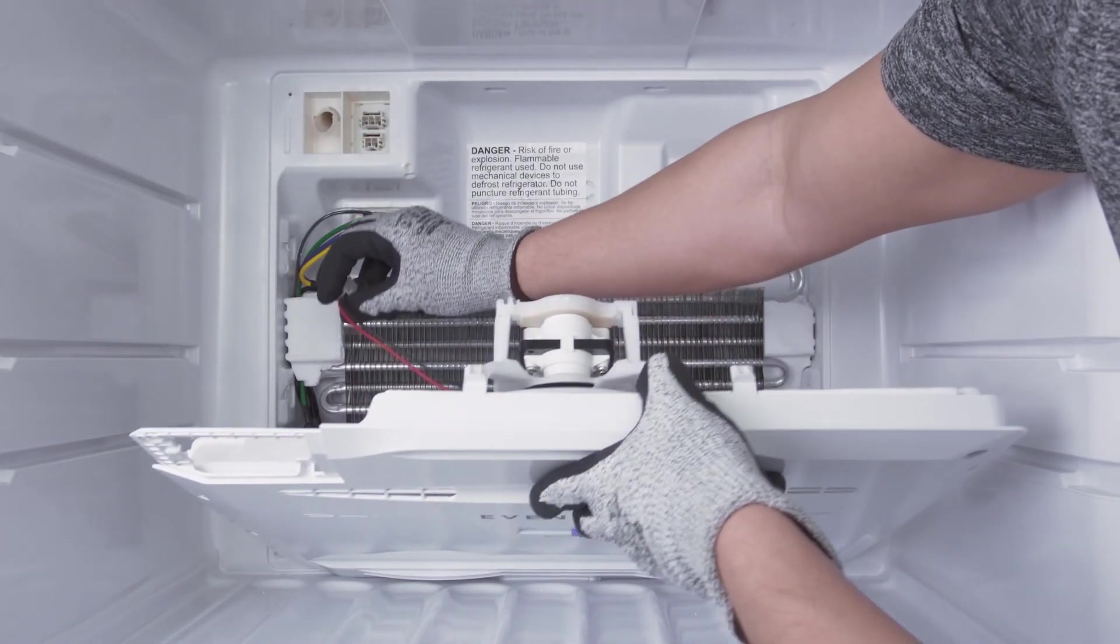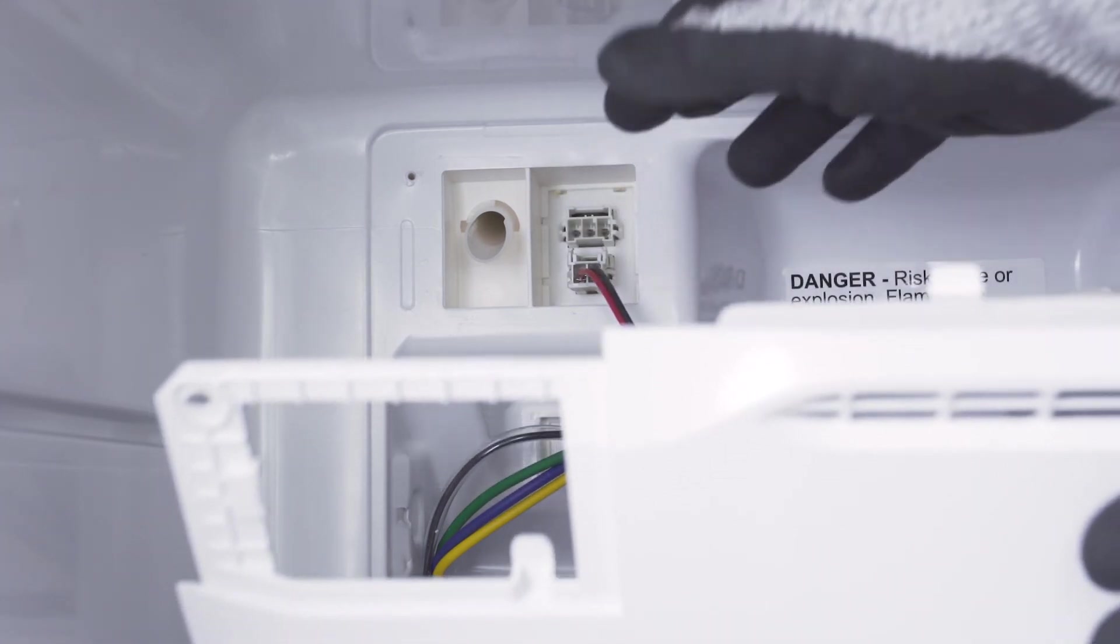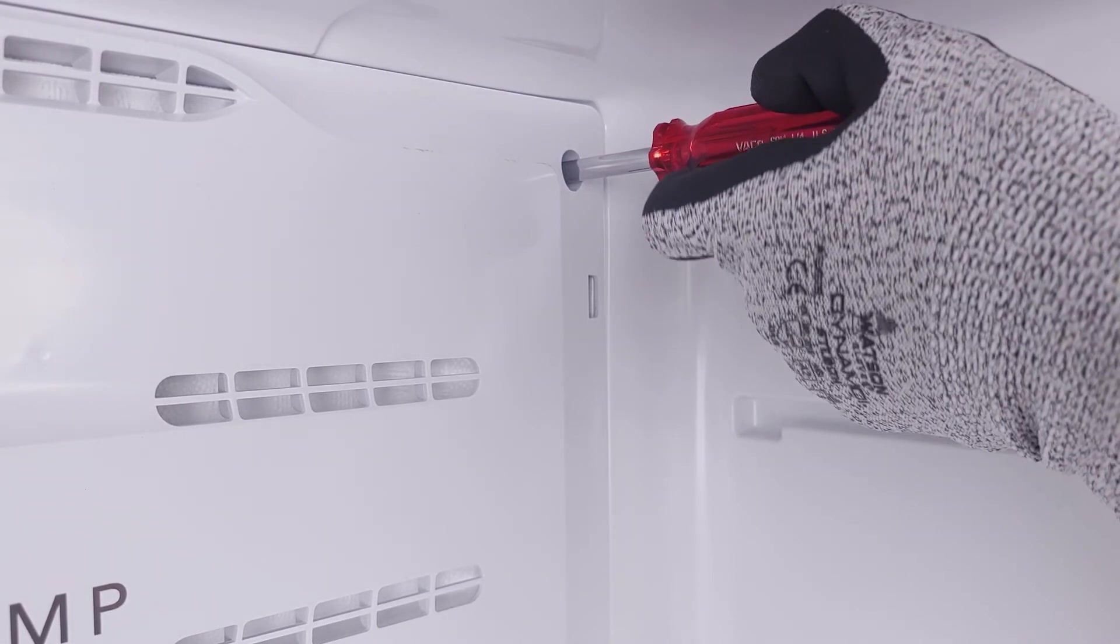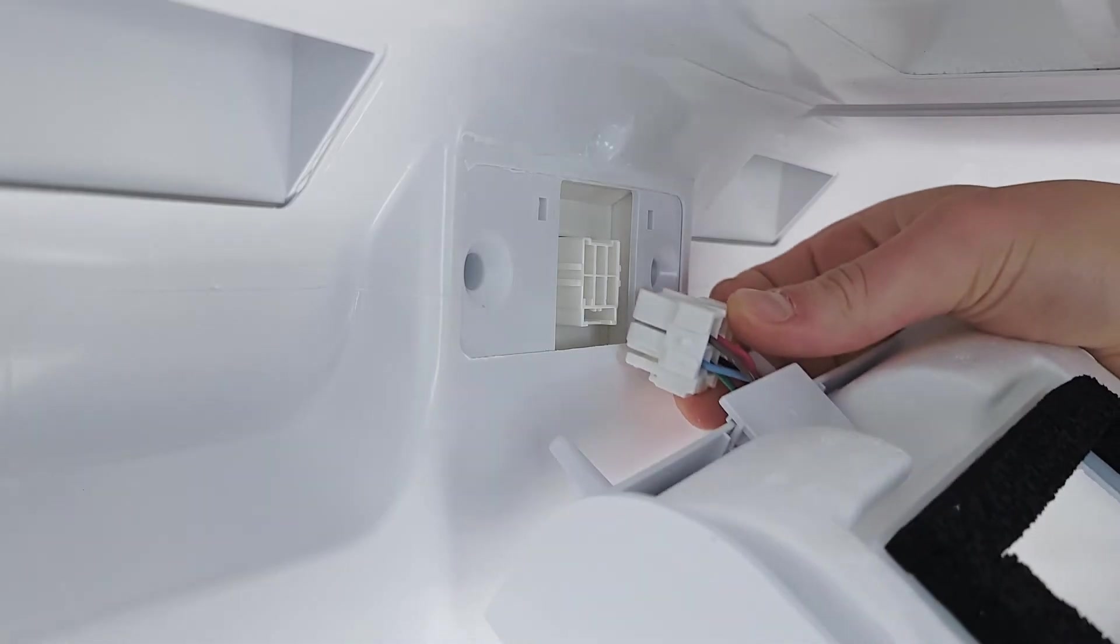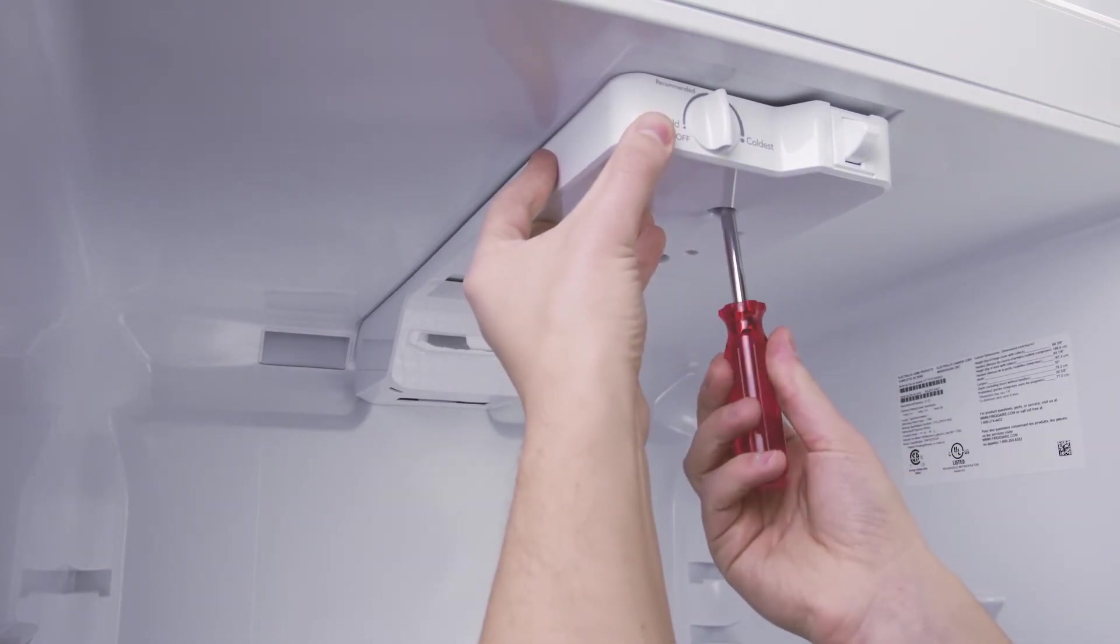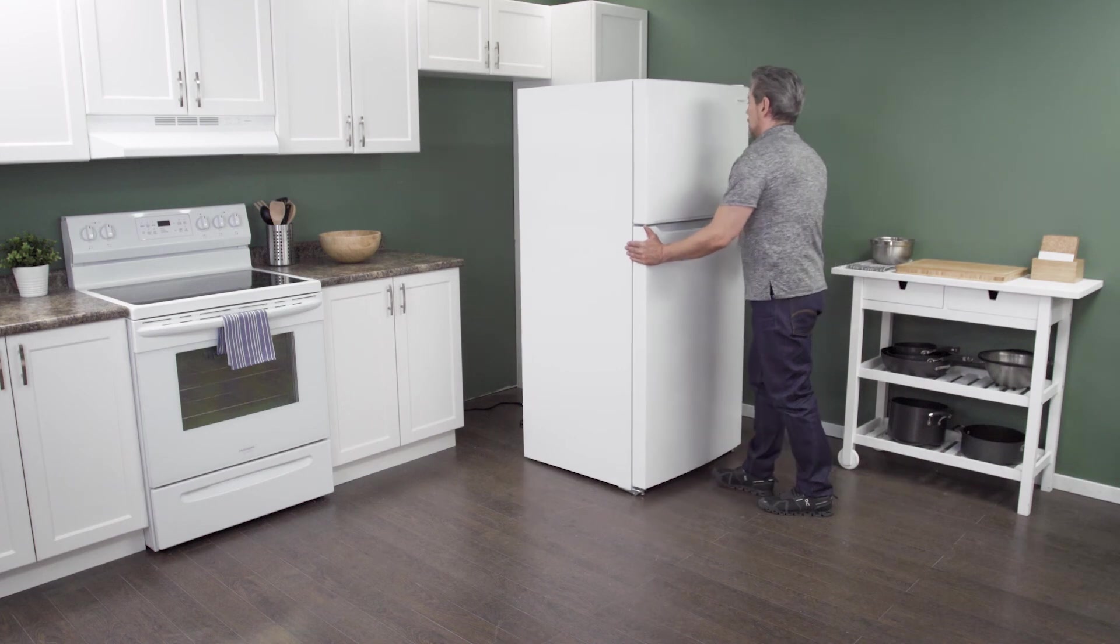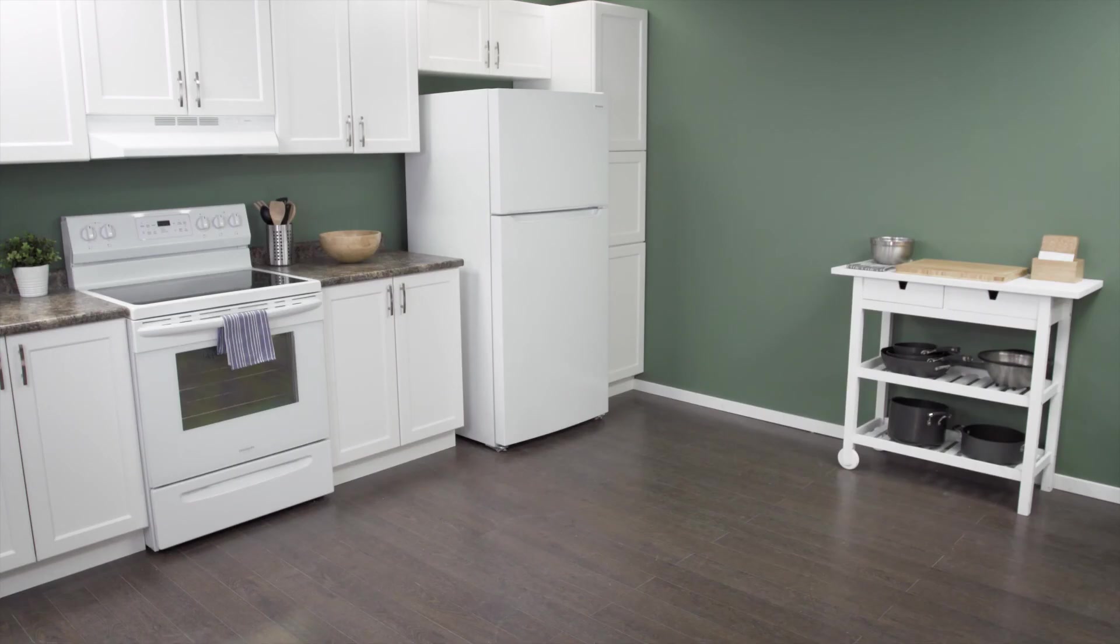Align the freezer cover panel. If needed, reconnect the wire harness. Now tighten the mounting screws. Plug in the cord to reconnect the power. Now slide it back into place. Make sure to leave a couple of inches of space between the refrigerator and the wall. This will allow for proper air flow. Now test the refrigerator to see if it's working properly.